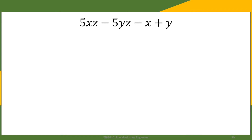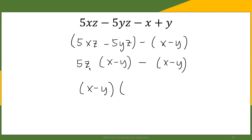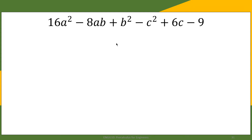Another example: we group 5xz minus 5yz, and since this is minus, we get x minus y. We factor out 5z from the first group, leaving x minus y. Then we factor out negative 1 from the second group, also leaving x minus y. Since x minus y is common to both, we factor it out and are left with 5z minus 1. This is the complete factored form of the given polynomial.